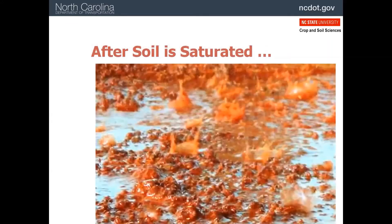Back to our rain splash picture, showing that the soil is saturated with puddles forming and runoff will start happening. If you look at this picture, what should come to mind is how could I prevent this? And in most cases, a ground cover is what you should be thinking about.